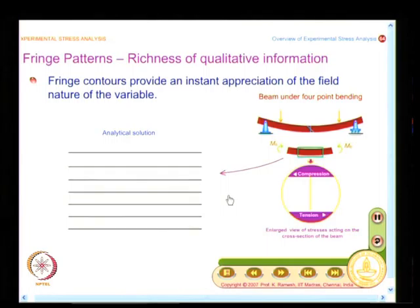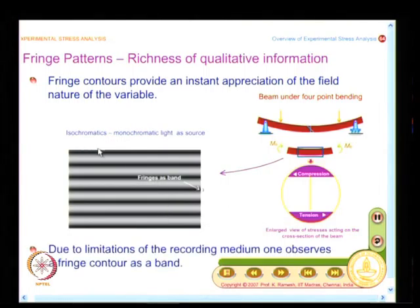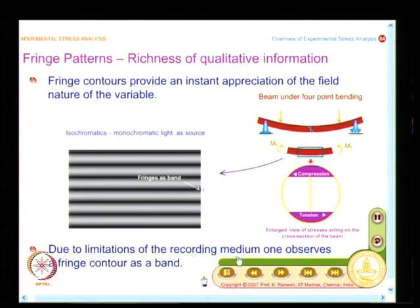When I look at the experiment, what happens? I get horizontal lines, but they are not thin lines — I have a band. Nevertheless, I got horizontal contours. We said the reason you see that as a band is because of the limitations of the recording medium; one observes a fringe contour as a band in all optical techniques. One of the most challenging aspects for any experimental analysis is how to number these fringes, because I need to know the fringe order, then use the appropriate equation to find out what to interpret.